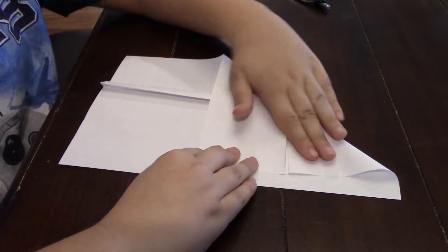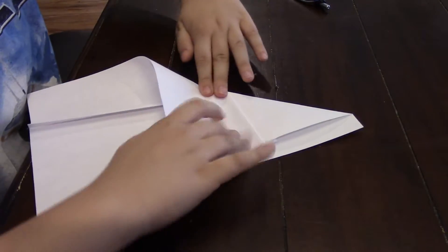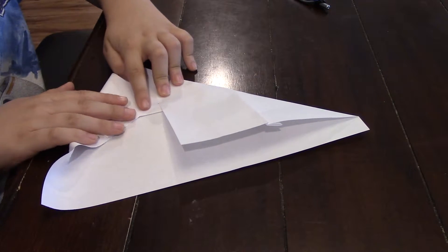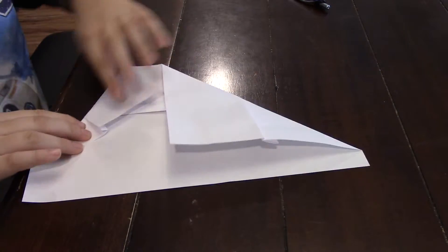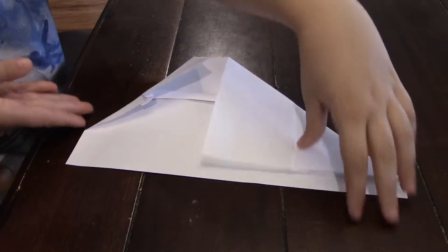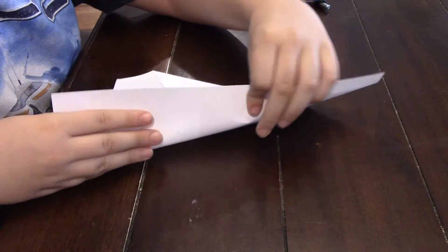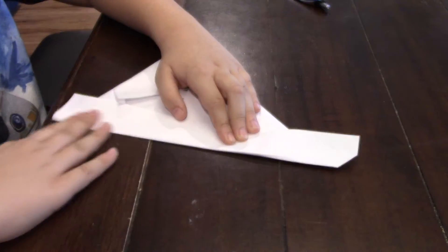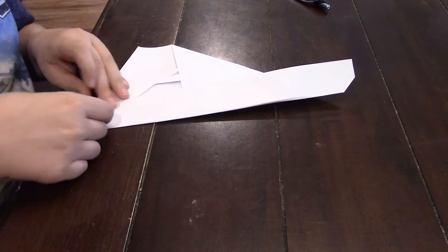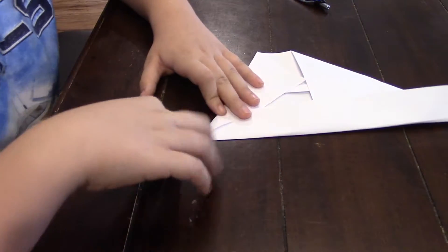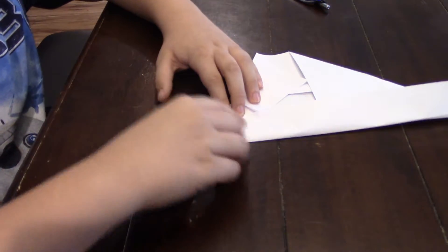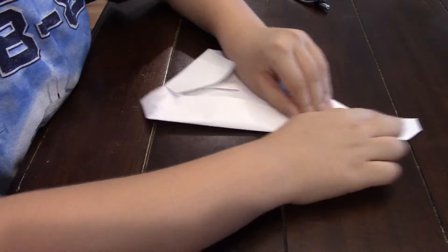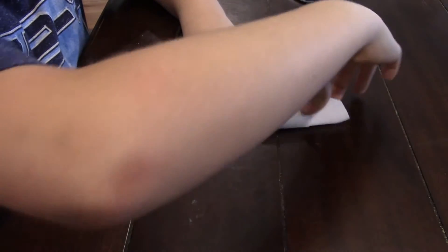Now you're going to fold this down about that far and then fold it like this. So now we're going to take this bottom and fold it up about that far and fold this tip right here back. And now we're going to take this point right here and fold it up about like that. And this is going to be Jabba's tail right here. And we're just going to fold that up.